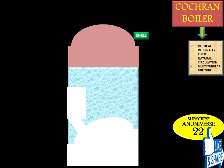It consists of a vertical cylindrical shell having a hemispherical top, and the furnace is also hemispherical in shape. The main reason for the hemispherical shape is to deflect the hot gases back and pass them through the flue. Any unburnt fuel will also be deflected back, which is why the top is of dome shape.